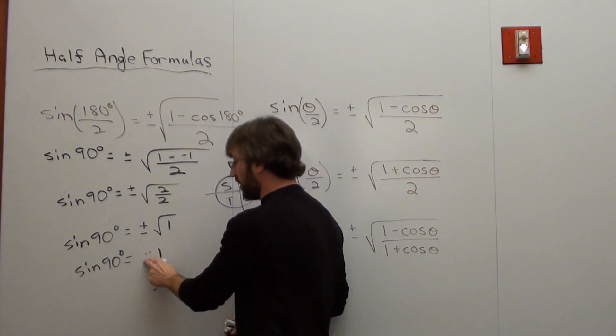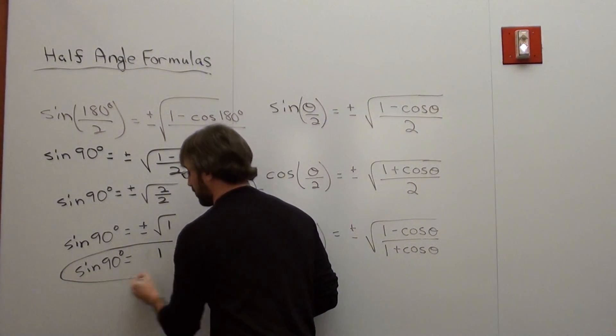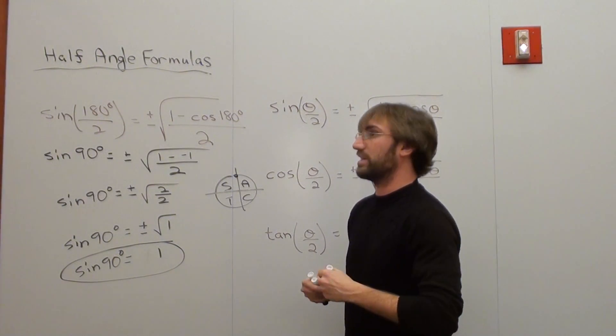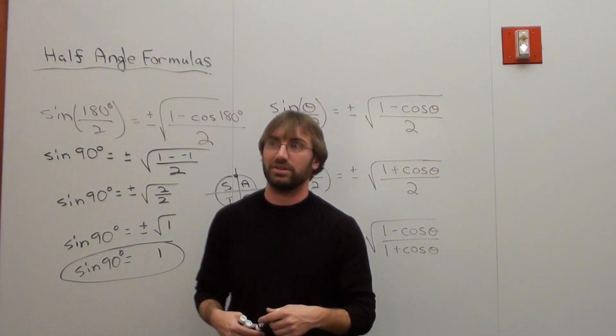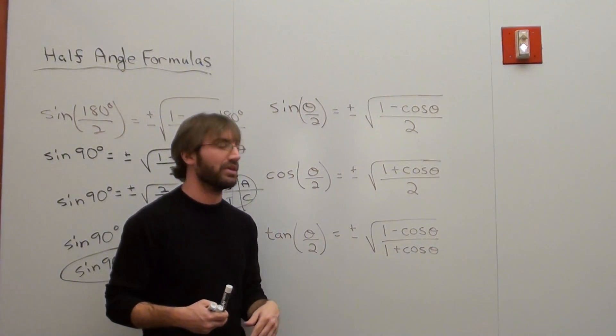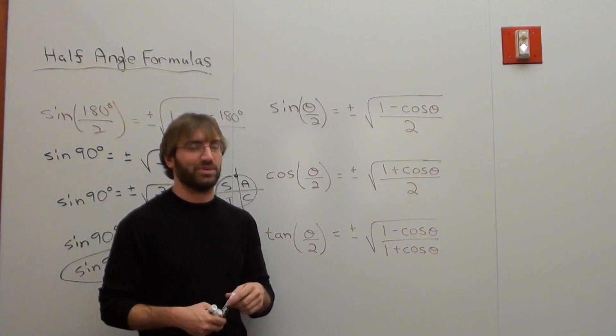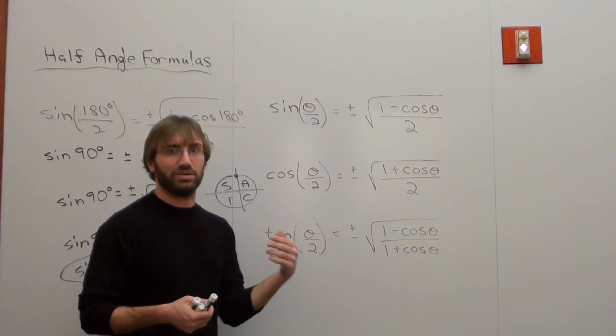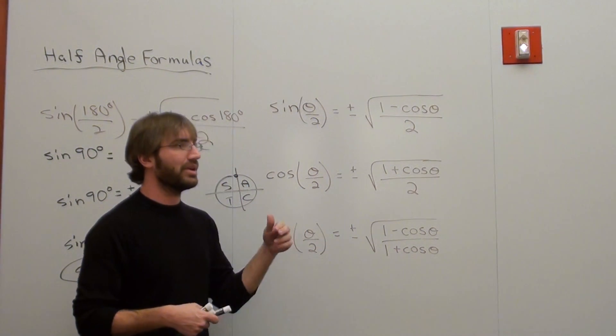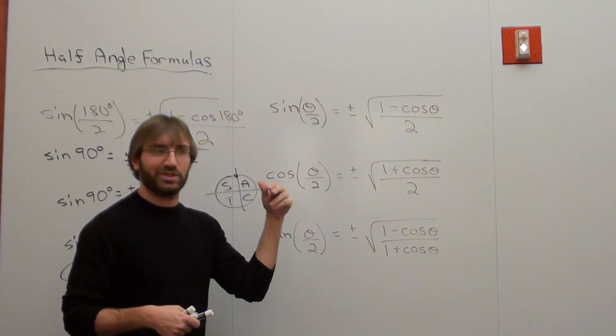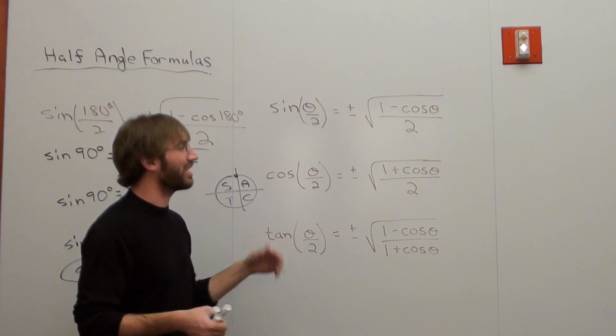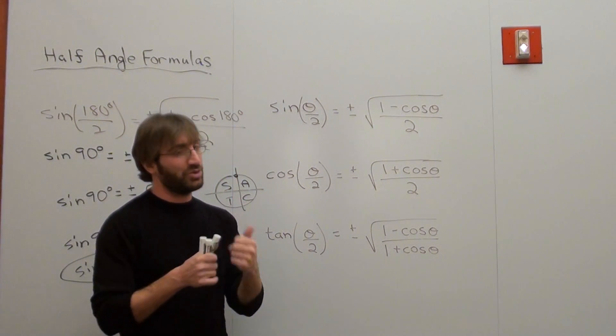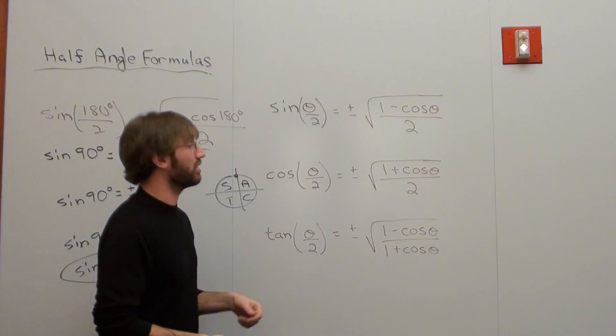Now most of your answers when you end up doing this are going to be pretty brutal. What I mean by that, simply, is like if you do sine of 22.5 degrees, you're going to get something like root 2 minus the 4th root of 3, or square root of 2 minus root 3 over something. It's pretty brutal. Just stay with it.